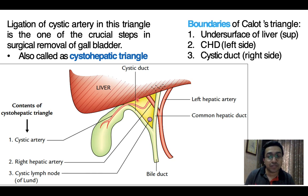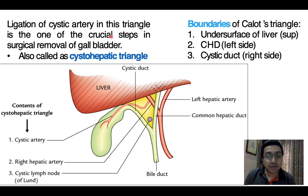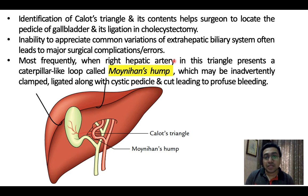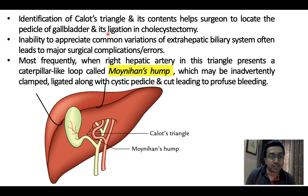These three primarily form the major contents of Calot's triangle, which is very important from a surgical point of view. Ligation of the cystic artery in this triangle is one of the crucial steps in the surgical removal of the gallbladder — cholecystectomy. Identification of Calot's triangle and its contents helps surgeons locate the pedicle of the gallbladder for ligation. Inability to appreciate common variations of the extra-hepatic biliary system often leads to major surgical complications.